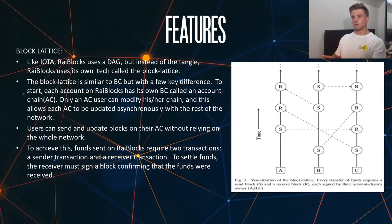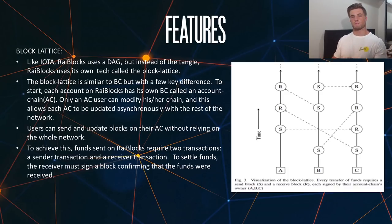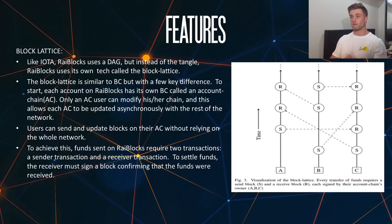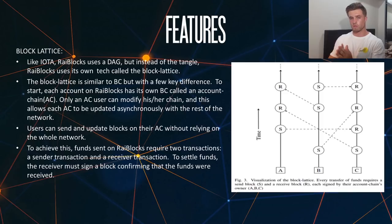To start, each account on Ryblox will have its own blockchain called an account chain, and only the account chain user can modify his or her chain. This allows each account chain to be updated asynchronously with the rest of the network, meaning it doesn't have to update at the same time as everyone else to function — which is a really cool feature. Users can also send and update their blocks on their account chain without relying on the whole network.